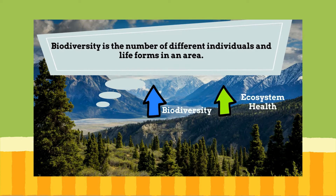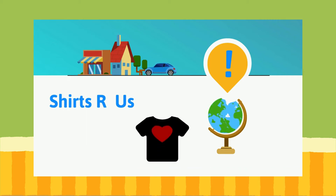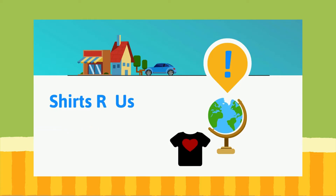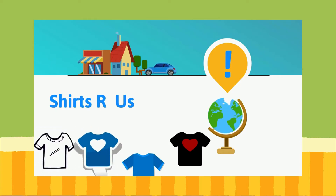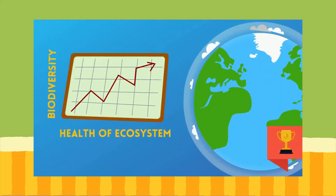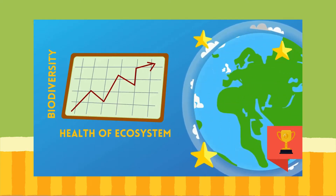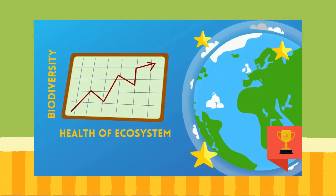Think of it like this: you're running a business. You want your business to be healthy and make money. Imagine you sell shirts; however, you only sell a black shirt with a heart on it, so you're limited. If these shirts go out of style, you're out of business. If you have a variety of shirts, as fashion changes and tastes change, you're better able to adapt. As biodiversity increases, the ecosystem has the ability to adapt to changes, and a healthy ecosystem has a greater chance of recovering from disasters.